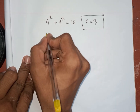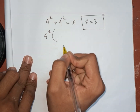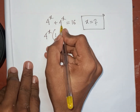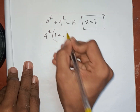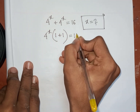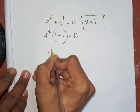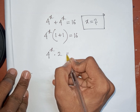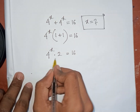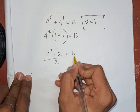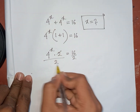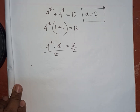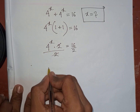4 power x is common, so 4 power x is factored out of the bracket. This divided by this means 1, plus this divided by this means 1, bracket close, is equal to 16. Now 4 power x times 1 plus 1, that means 2, is equal to 16. Now we divide by 2 on both sides — this 2 cancels.